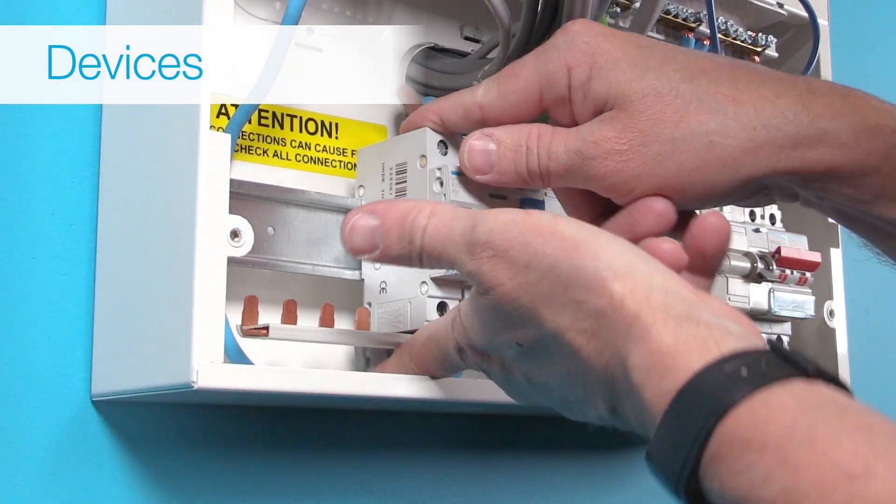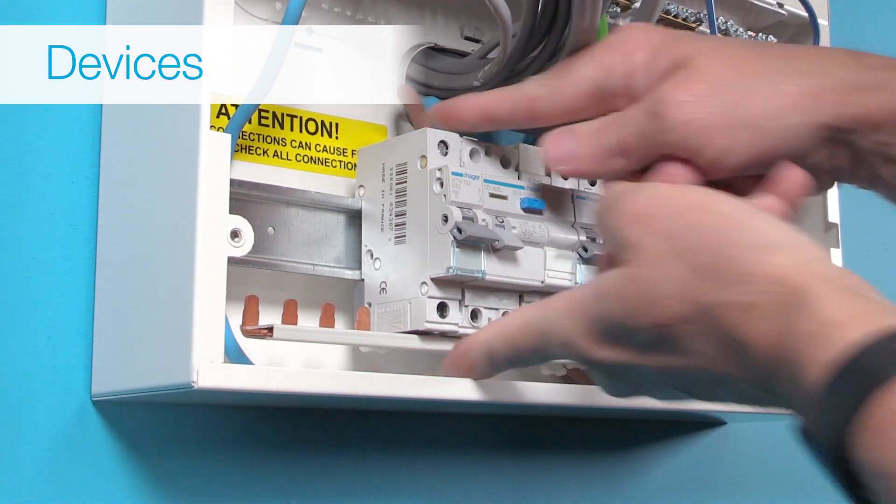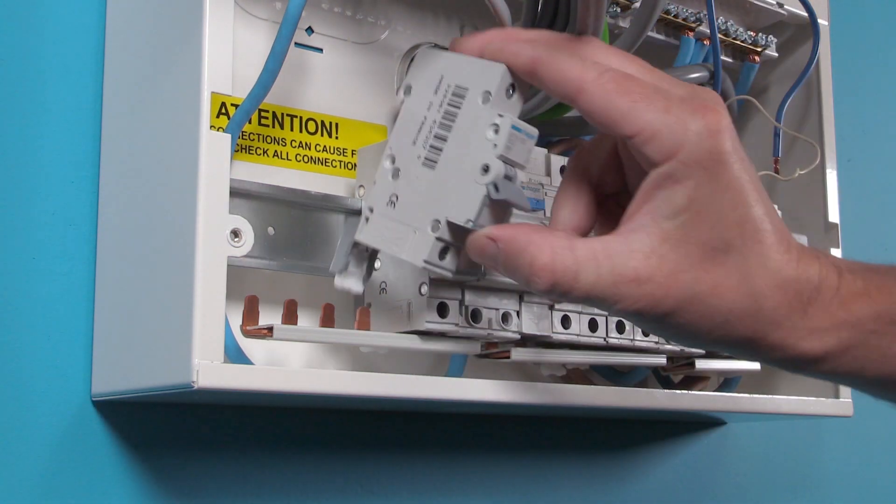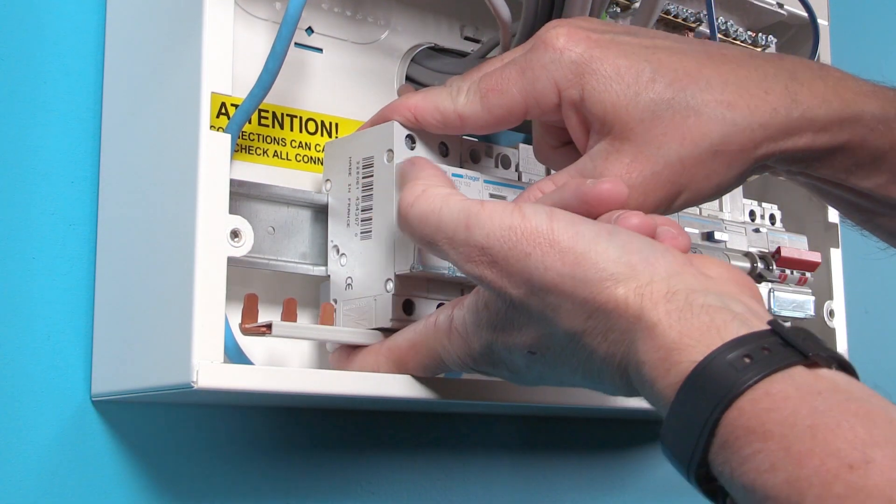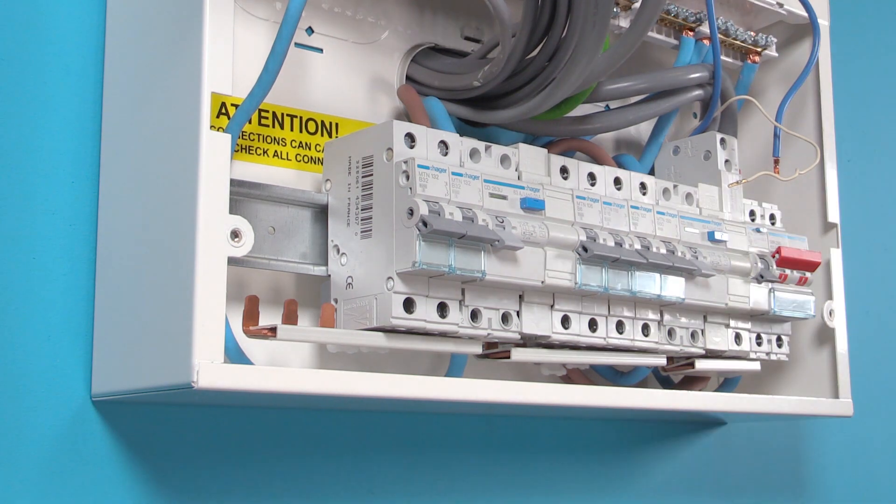Hager devices all feature a clip on the back which allows the installer to remove devices individually from the bus bar. This, along with our all-metal din rail, means there will be no distortion when installing devices.